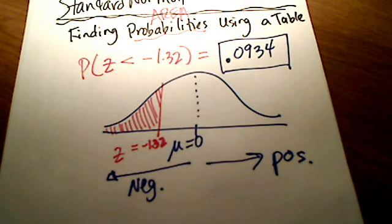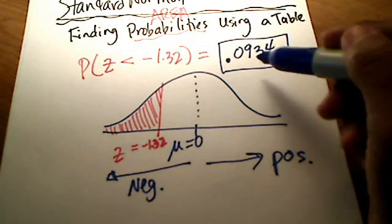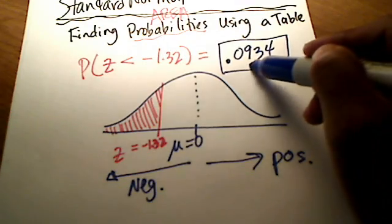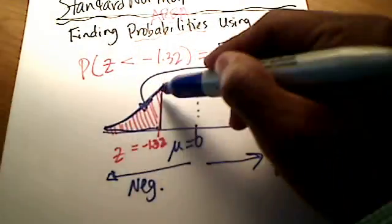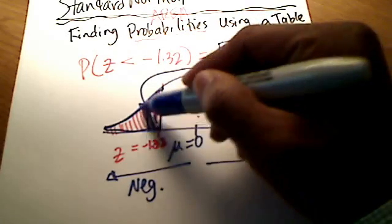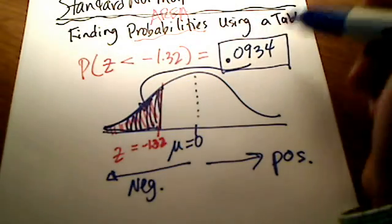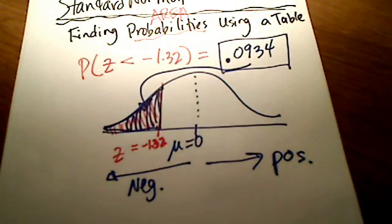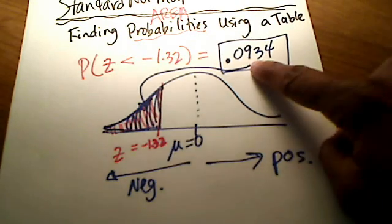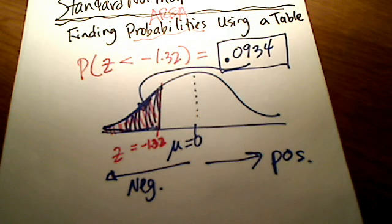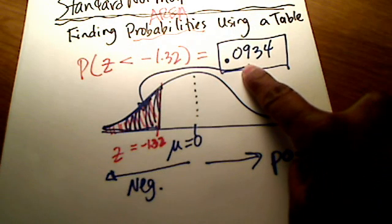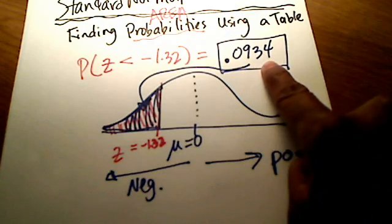So 0.0934 corresponds to this area underneath the curve — all of this area to the left of negative 1.32 is 0.0934, which is definitely less than 1 since the total area under the curve is 1. If you're using MyMathLab, it wants it rounded to four decimal places, and the table already does that for you. Some people look at that decimal and say that's about 9% — 9.34% to be exact.